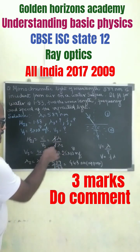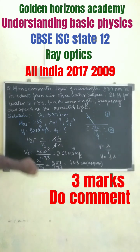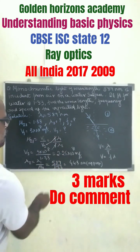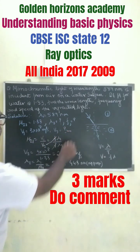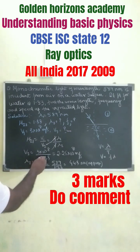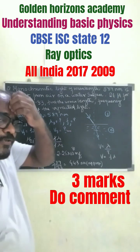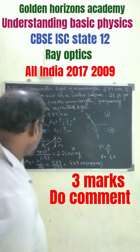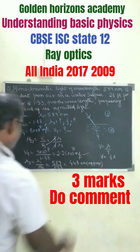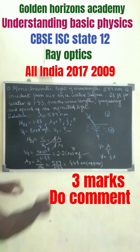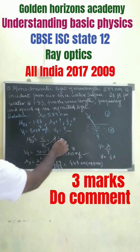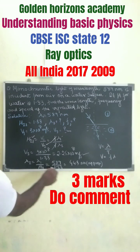We can cancel out the frequency f from both sides. To find v2, the velocity in water, we use v1 equals 3×10⁸ meter per second in air. From this calculation we get v2, and for lambda2 we use lambda2 equals lambda1 divided by mu(2,1).